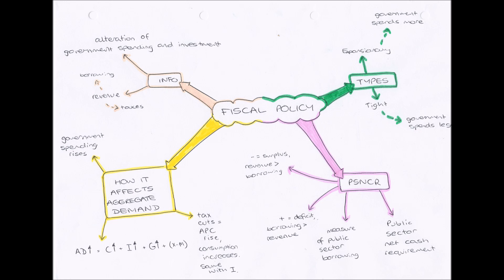And we have two types of fiscal policy. We have expansionary fiscal policy, where the government will spend more money — there is an increase in government spending. And we have tight fiscal policy, which is where the government will not spend as much money; the government will spend less.